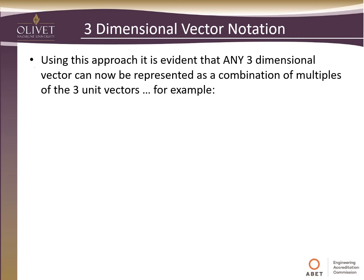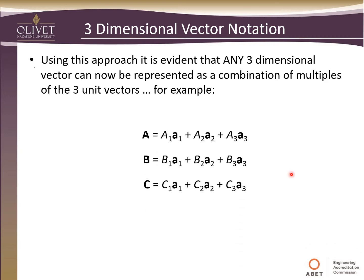Using this approach, it's evident that any three-dimensional vector can be represented as a combination of multiples of the three unit vectors A1, A2, and A3. Our vector A is really a result of its components: A1 magnitude times the A1 unit vector, plus A2 magnitude times the A2 unit vector, plus A3 magnitude times the A3 unit vector — scalar magnitudes times unit vectors. The same notation applies to vectors B and C. All three can be expressed in terms of these unit vectors.